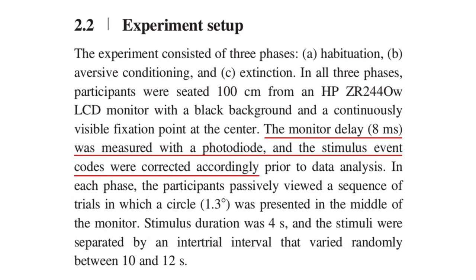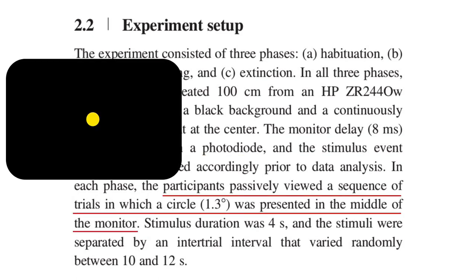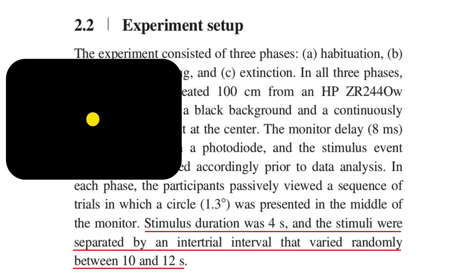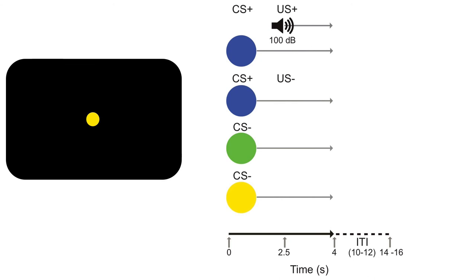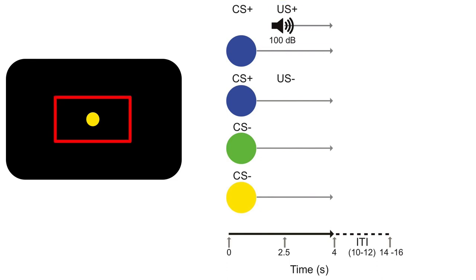Now let's go over the aversive conditioning procedure. Participants saw a sequence of stimuli. Each stimulus was a small colored disk in the center of the display. Stimulus duration was 4 seconds followed by an intertrial interval of 10 to 12 seconds. The aversive stimulus was a 1.5 second white noise burst, referred to as the Unconditioned Stimulus or US. It was 100 decibels, which isn't loud enough to damage the ears but was really unpleasant — it literally knocked me out of the chair the first time I heard it.